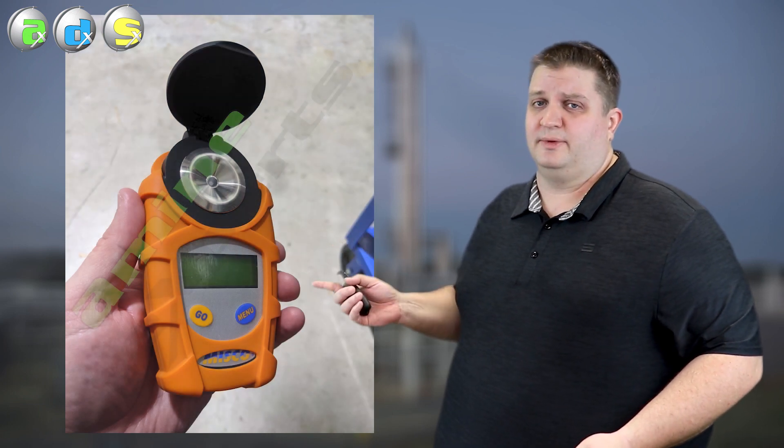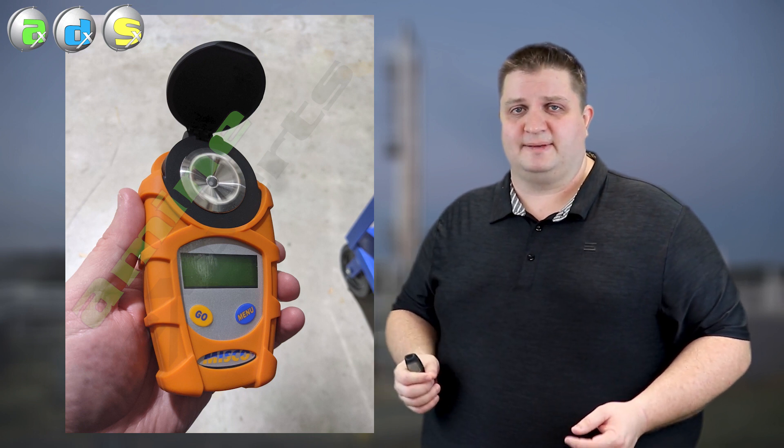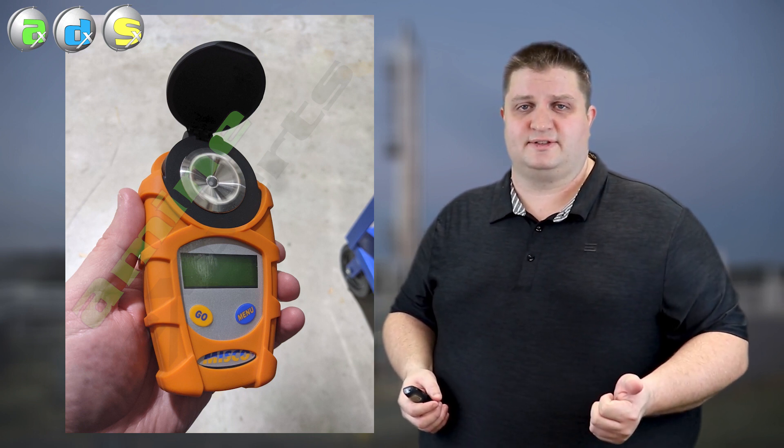Now that we've gone over the different ways we can look at the amine sample and what it means, the second most important test that's done on site is the amine strength. This is typically done through a titration method inside the lab through a procedure provided by your vendor. An alternative to that that we have found is the use of one of these. This is a digital refractometer. These are actually really quite handy because you can just do it on the spot, grab a sample, put a couple drops in, get a result.